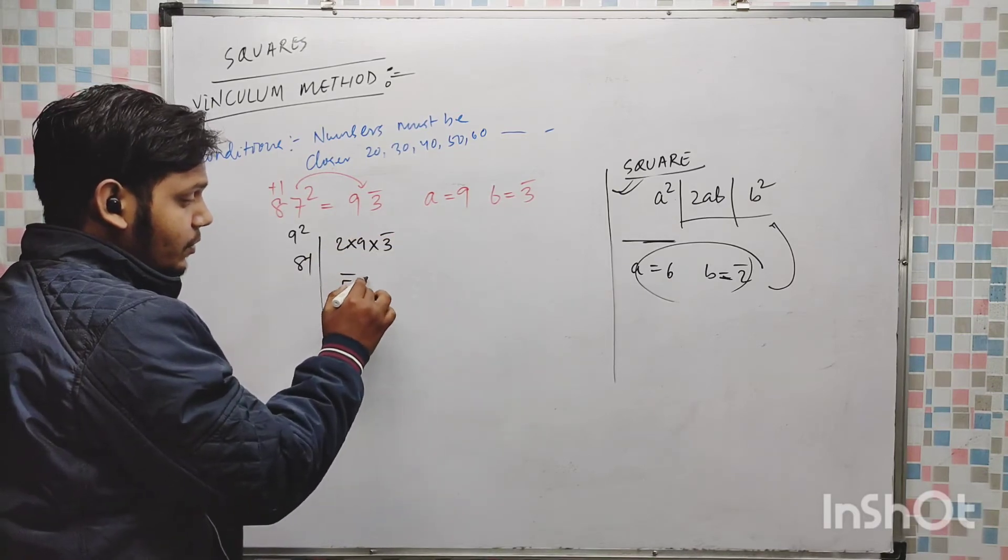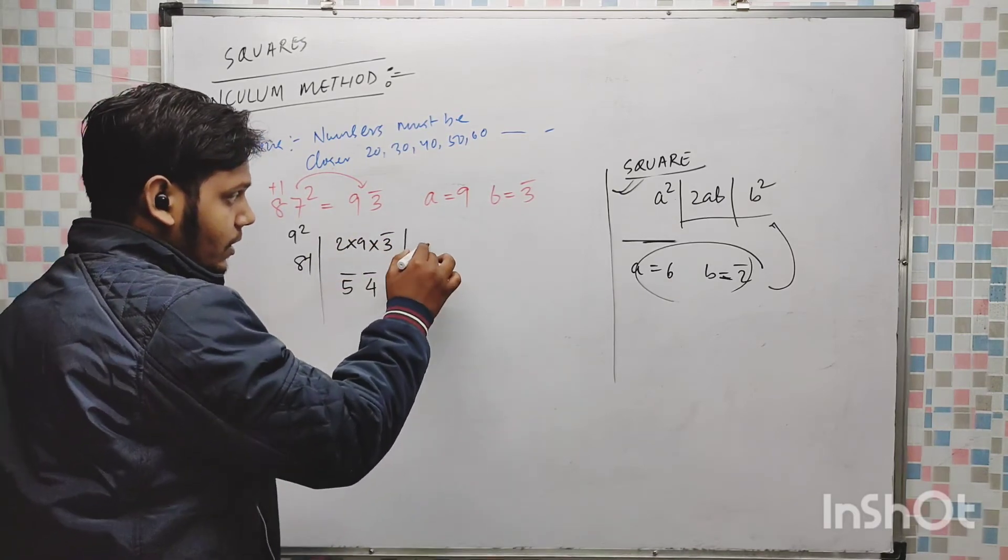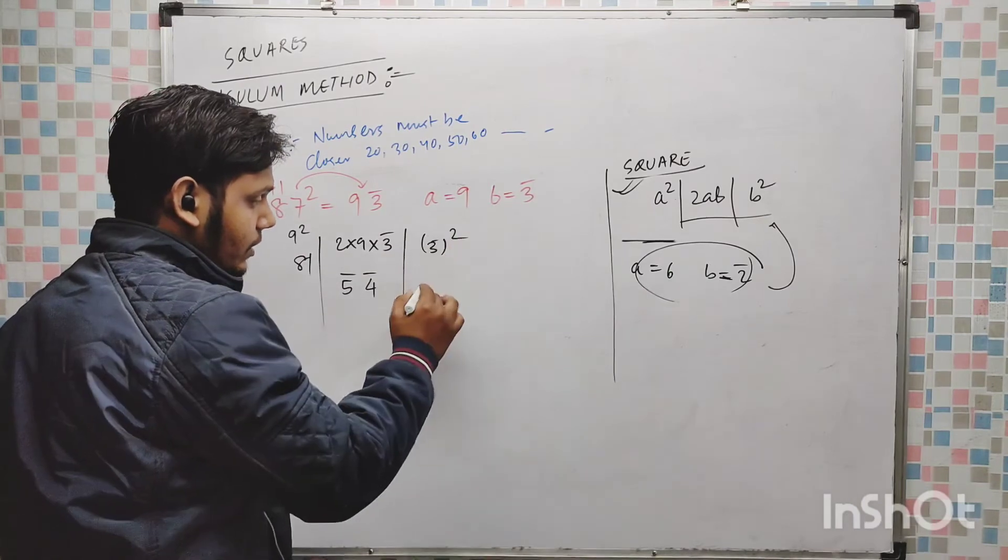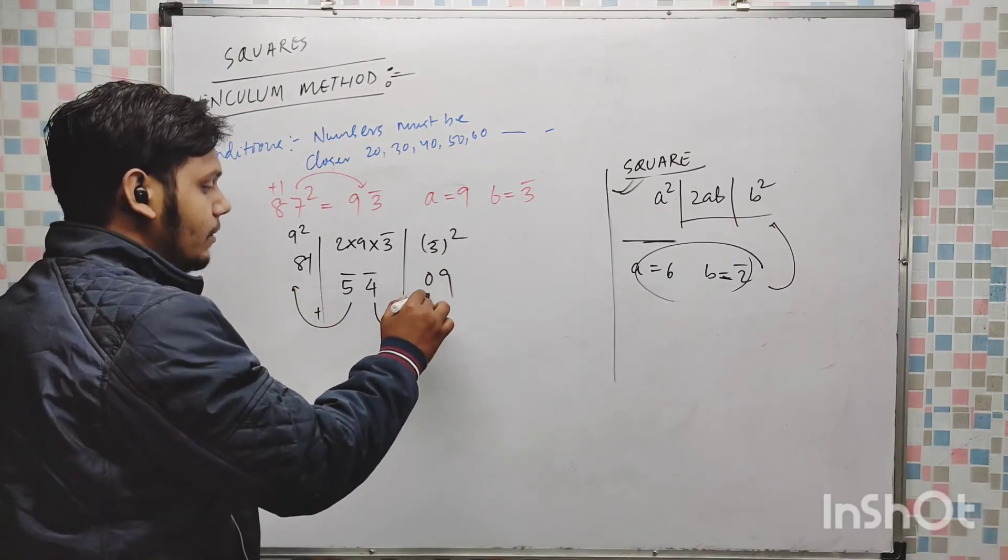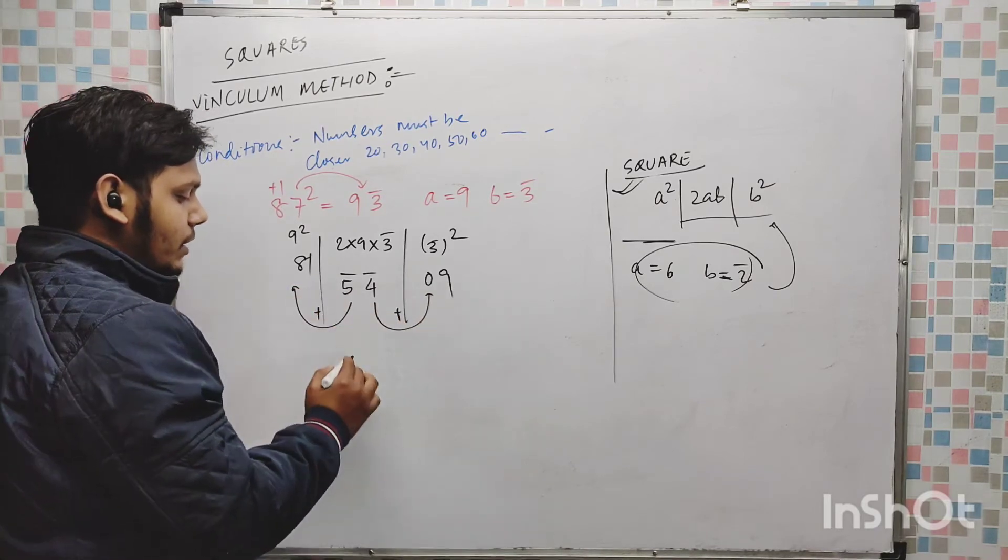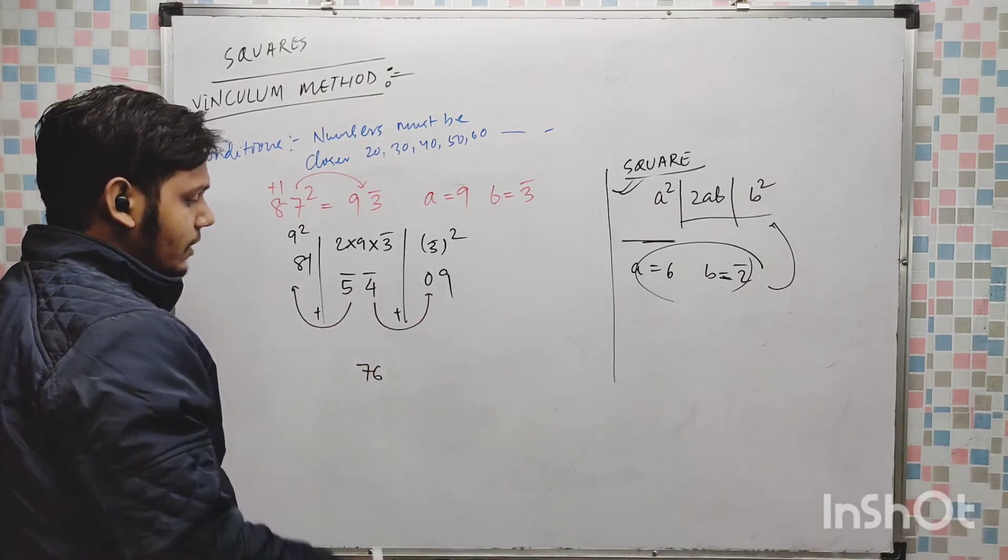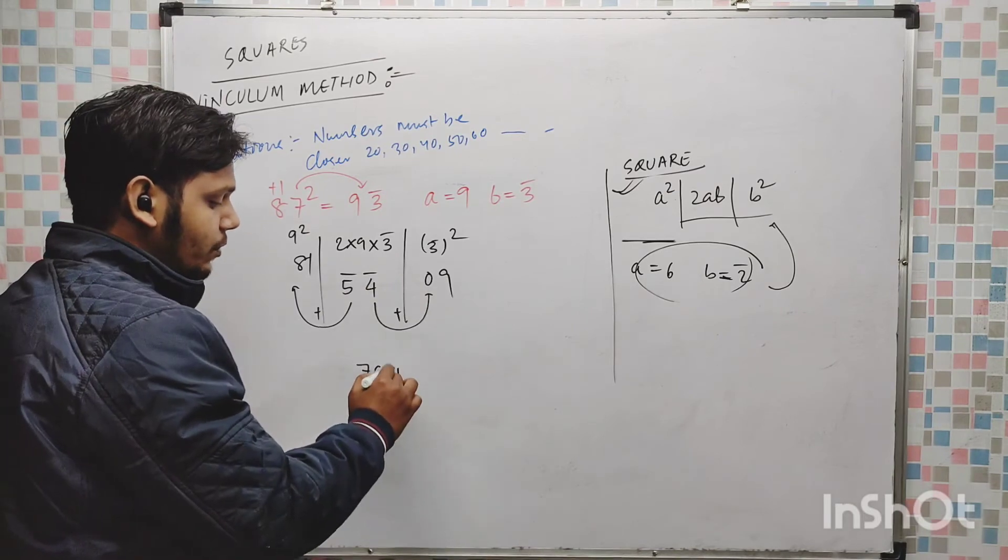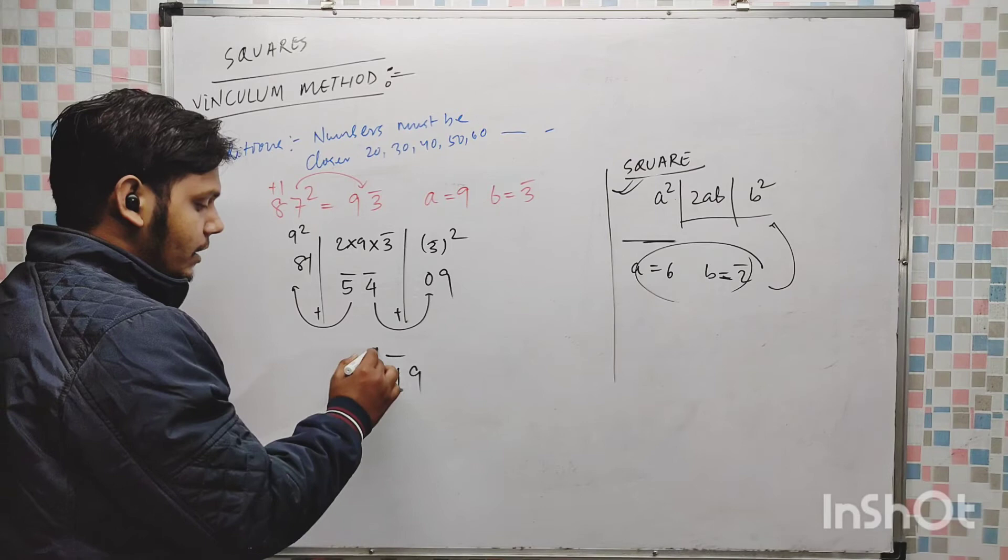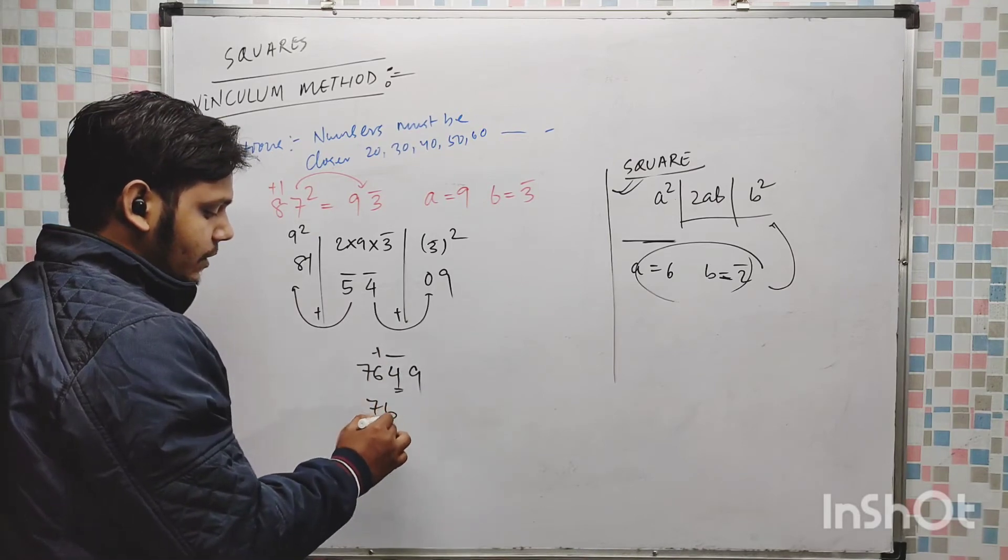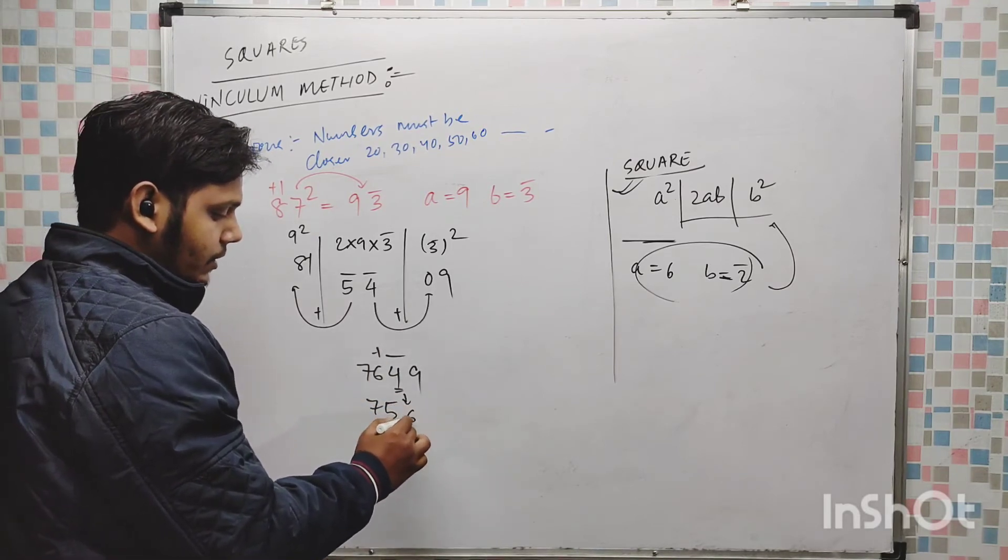2 into 9 into 3, 2 × 9 is 18, 18 × 3 is 54, so minus 54, and the 3 bar square that is 09. Now I have to add, 81 minus 5, 76, 4 and 4 bar and 4 bar, and thereafter 9. As we know that we are having bar here, so 7, 6 minus 1 is 5, 4 complement 6, 9.